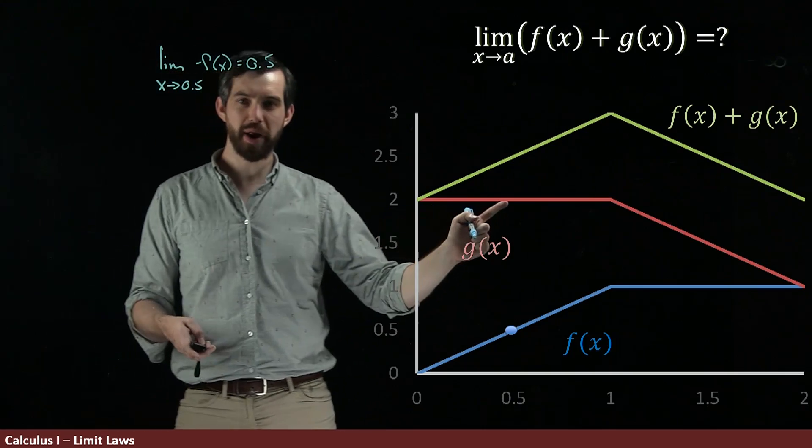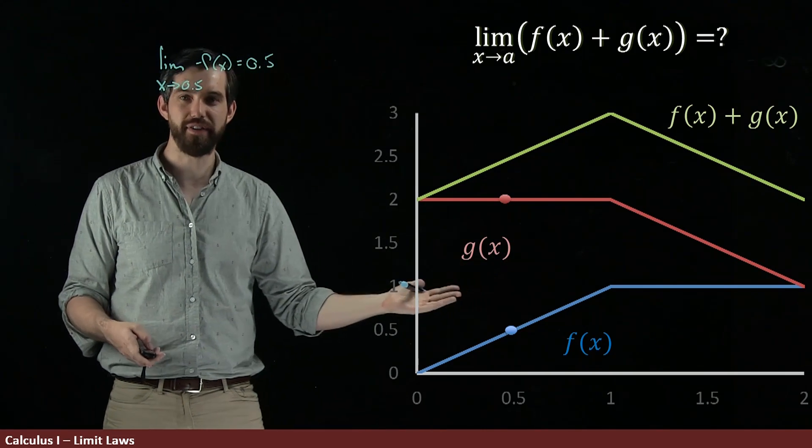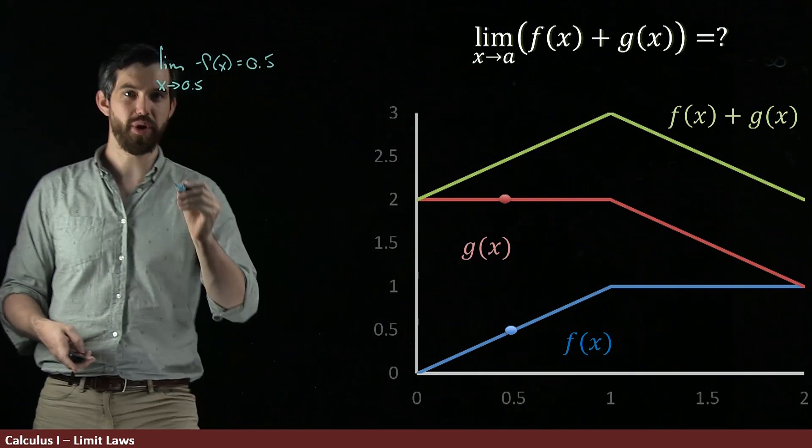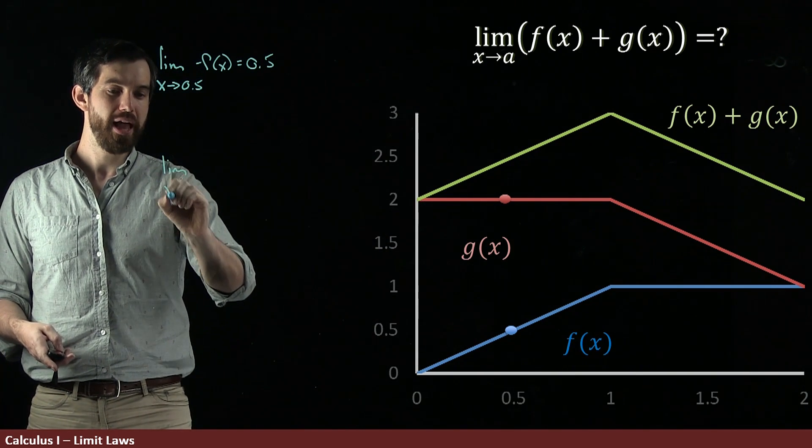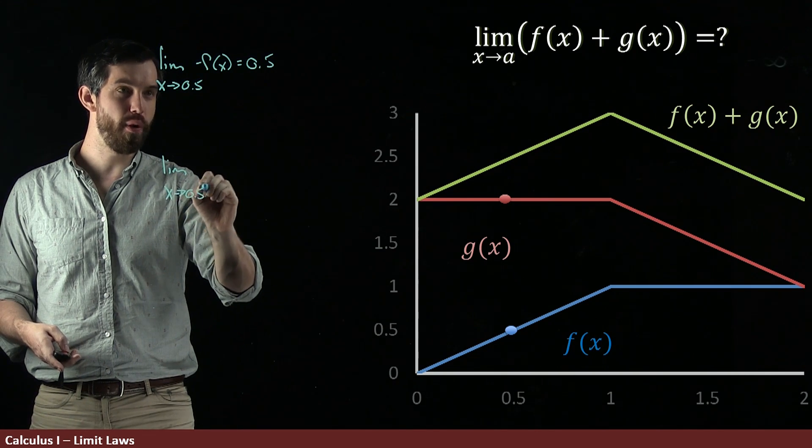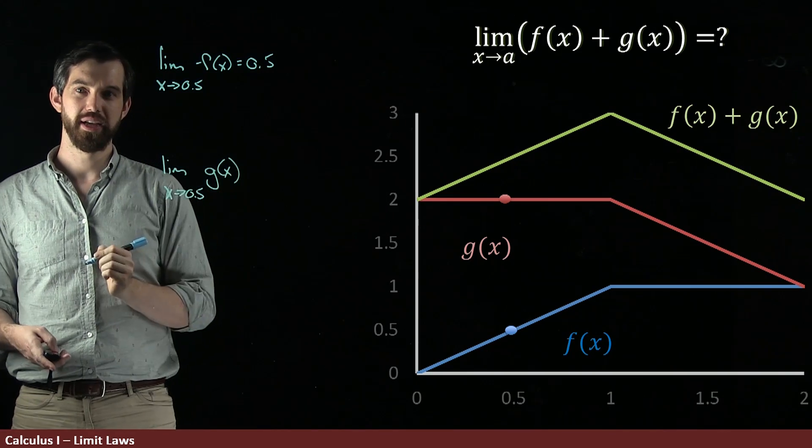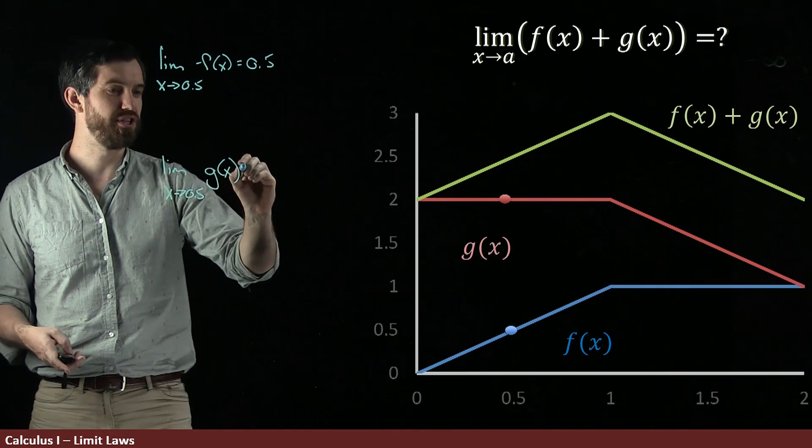Okay, so now let me do the same story, but I want to look at it for the g of x here. For g of x, it looks like it's got this height up here of 2. So I'm going to say that the limit as my x goes to 0.5, but not of my f now, now of my g of x, that this is going to be equal to 2.